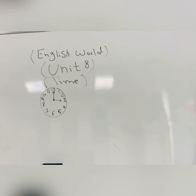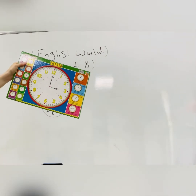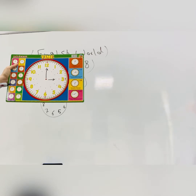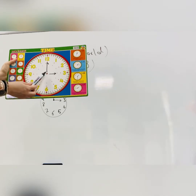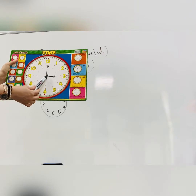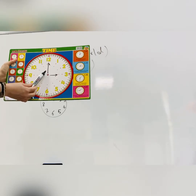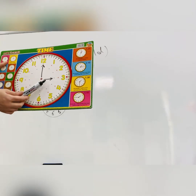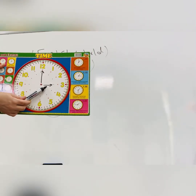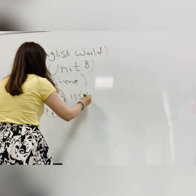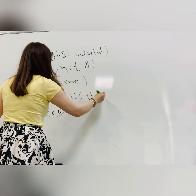Let's do it. Dear student, as we said, we are talking about time. We have the time here, talking about the numbers. As we learned at the other lesson, we learned about how we read the time. We can say it's 3 o'clock — why? Because the long line is on 12 and the short line is on 3. So we say it's 3 o'clock.